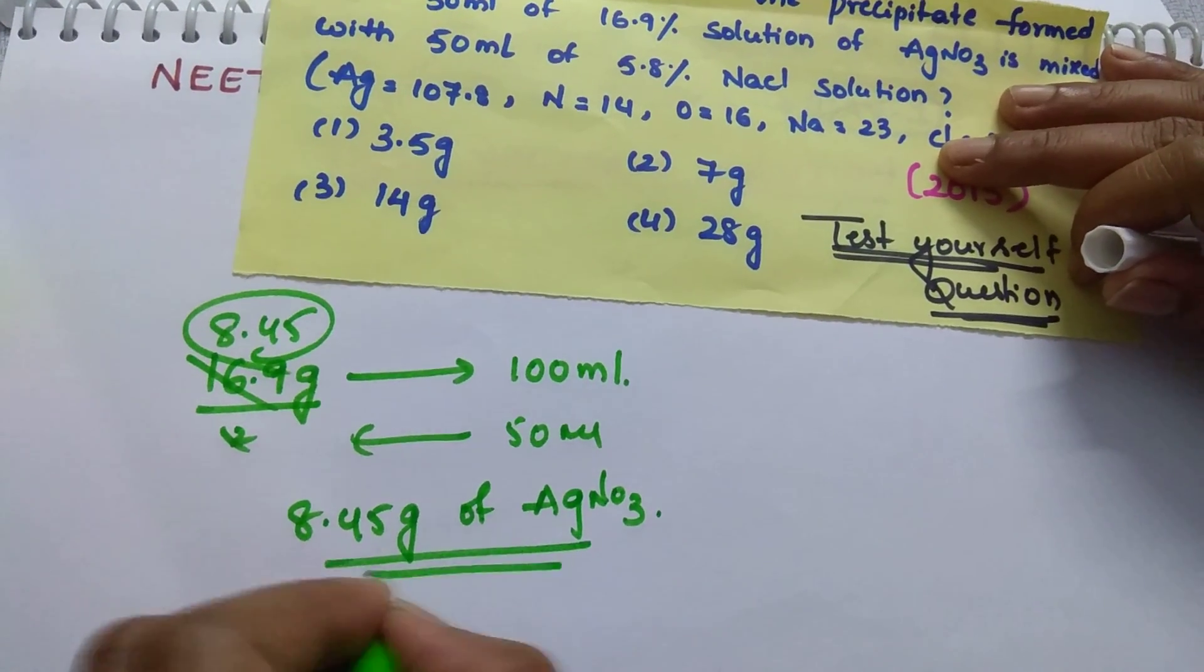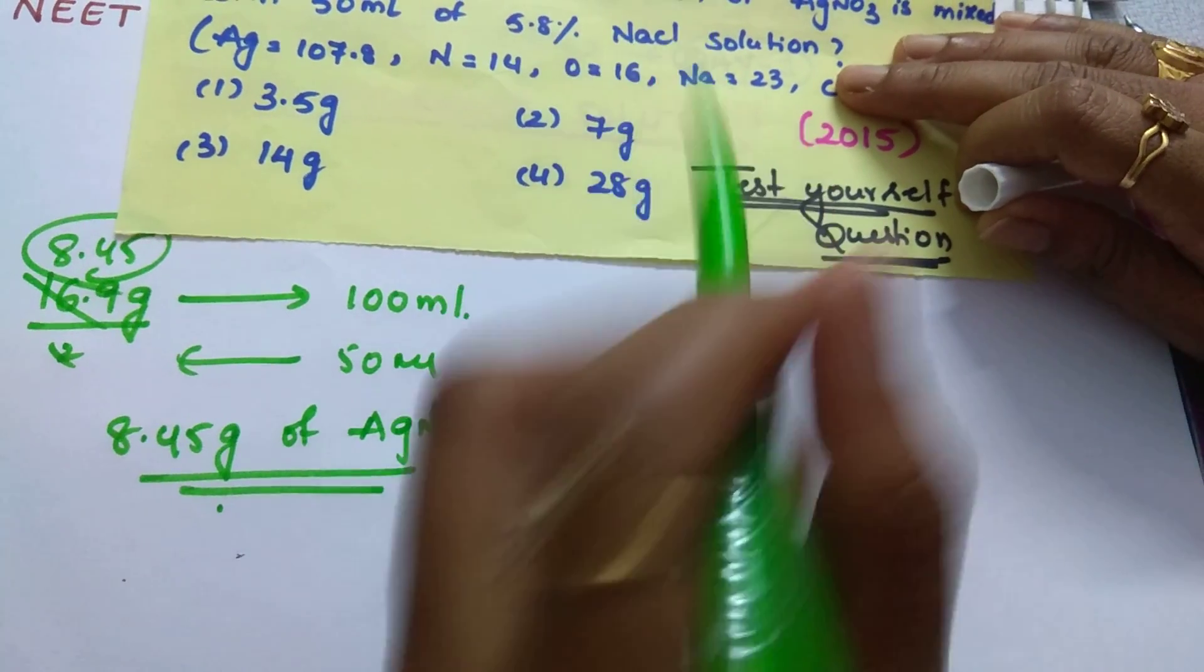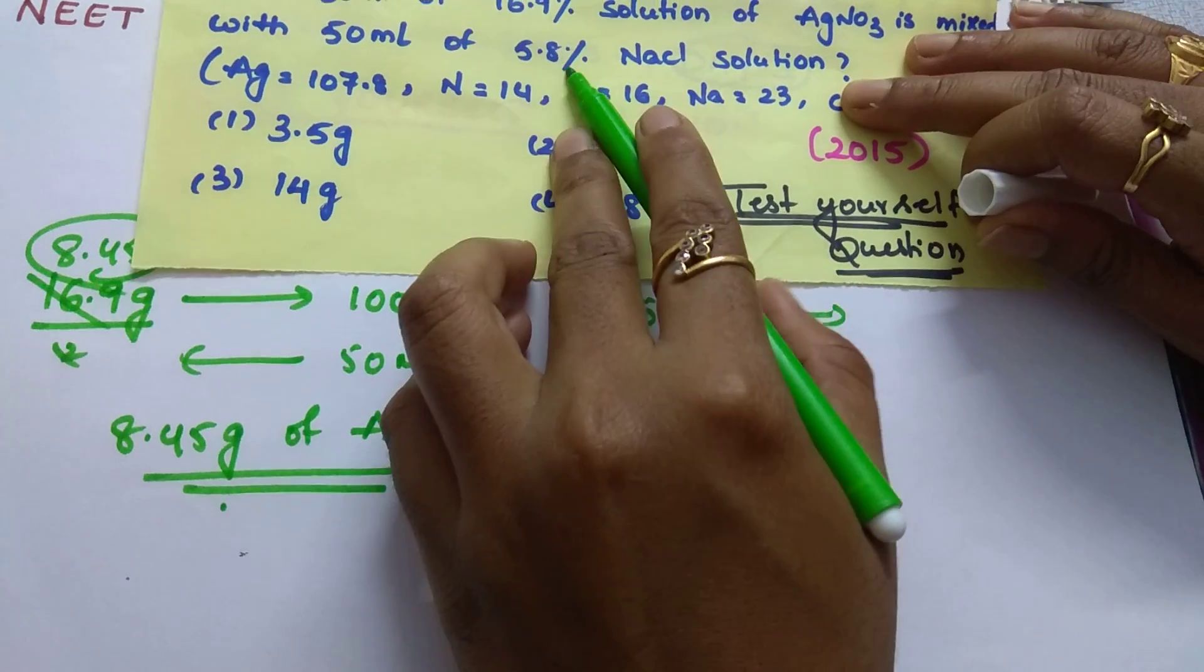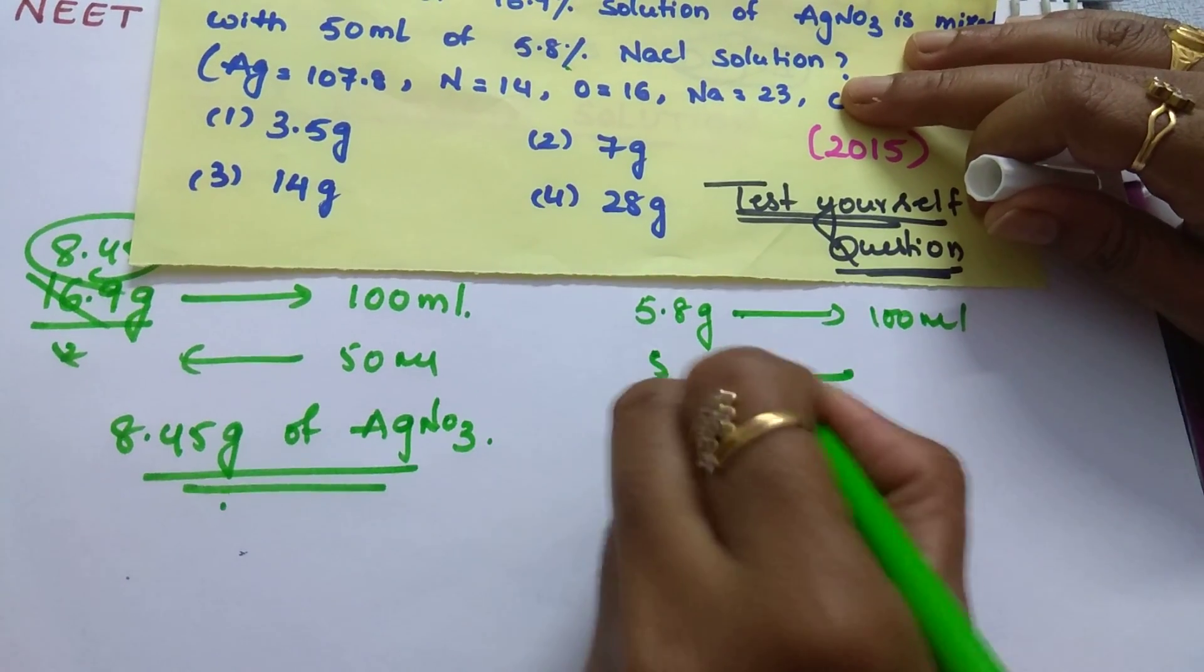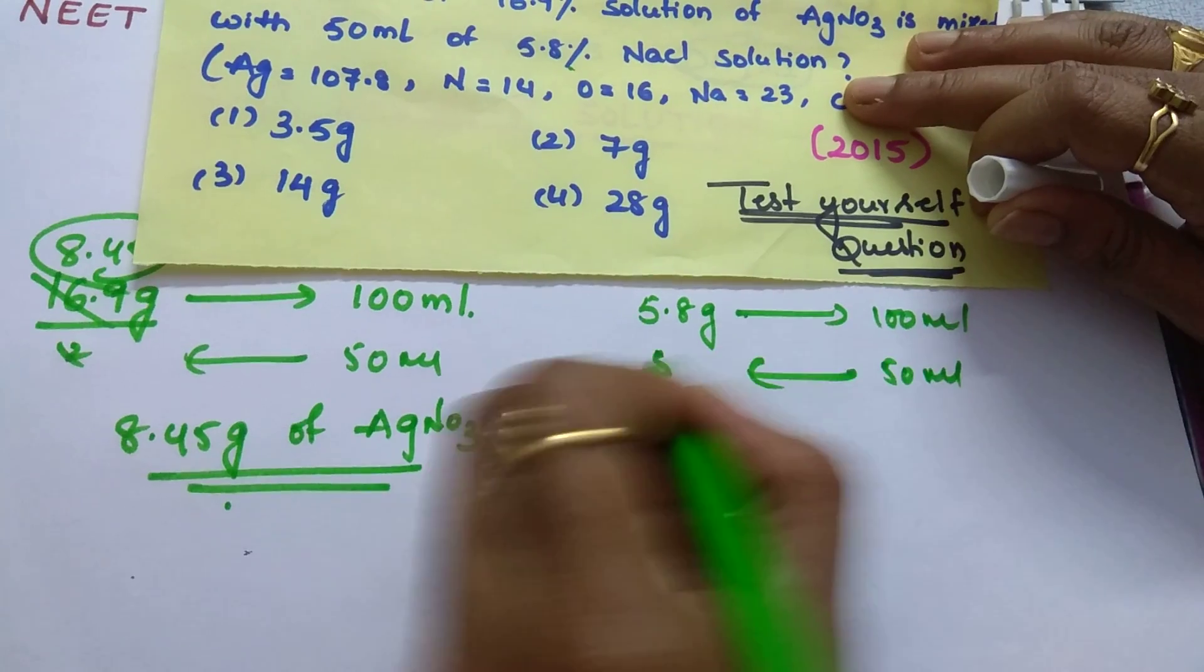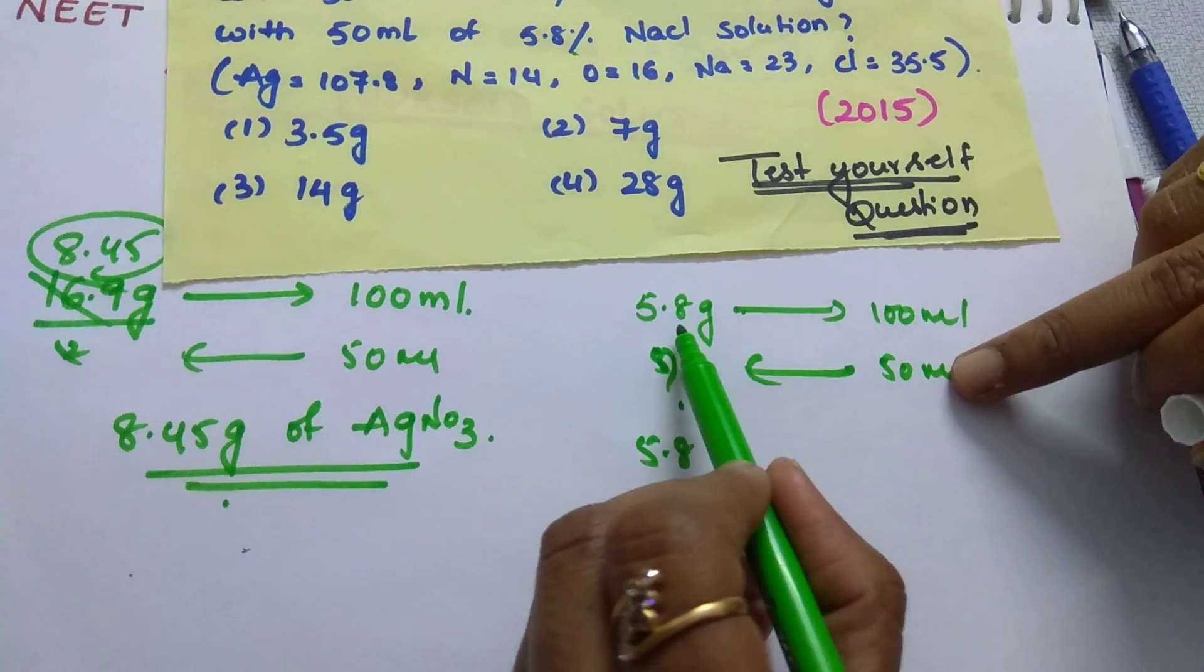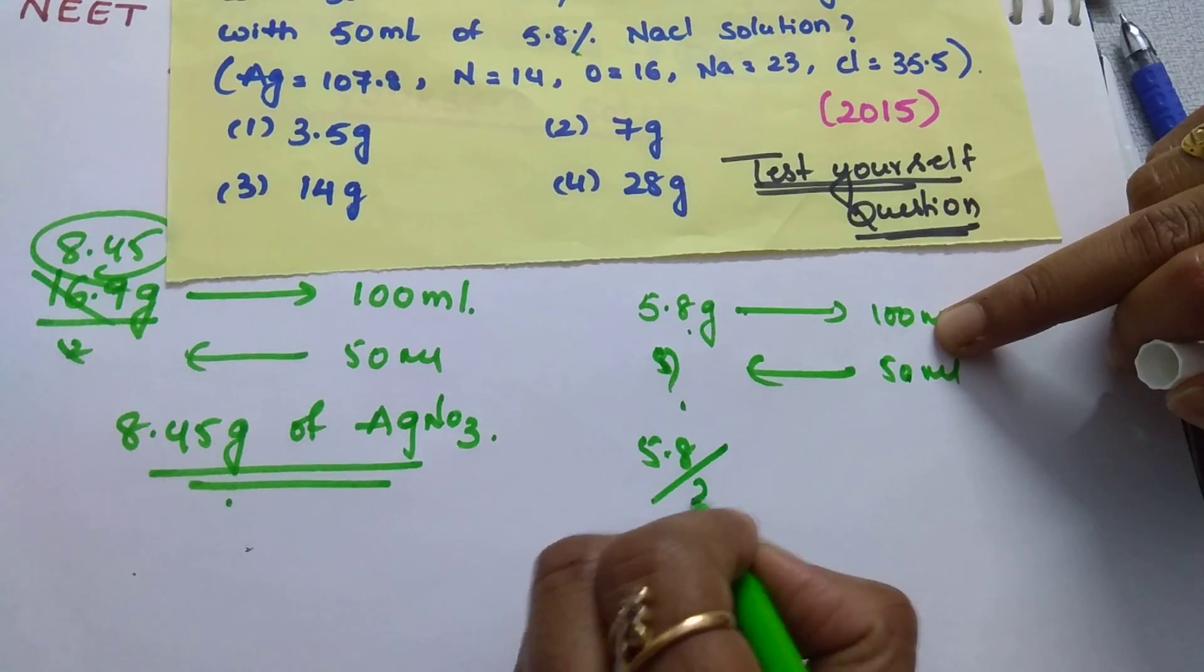Then same way 5.8% means 5.8 gram of NaCl is present in 100 ml. Then 50 ml consists of exactly half. 5.8 into 50 divided by 100. You will get 5.8 divided by 2, that is 2.9 gram of NaCl.